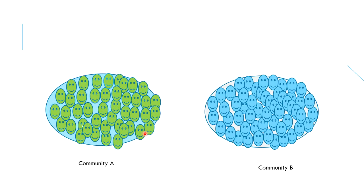Consider community A and community B. To assess the difference in health status, we look at the total number of deaths occurring in each community. We can say that community B is healthier because the number of deaths is limited there compared to community A, where deaths are much greater.